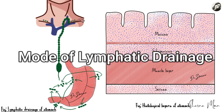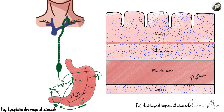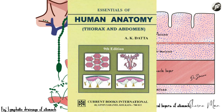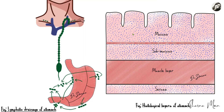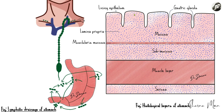The fourth part of the video covers the mode of lymphatic drainage, using information from Essentials of Human Anatomy by AK Datta, Thorax and Abdomen, 9th edition. To understand the mode of lymphatic drainage, we need to remember the four layers of the stomach: first the mucosa, then the submucosa, the muscle layer, and the serosa. Within the mucosa we have the lining epithelium on top, the lamina propria as the connective tissue layer below it, and the muscularis mucosa — the muscle of the mucosa. The gastric glands are also visible here.